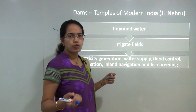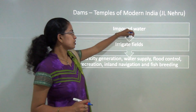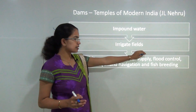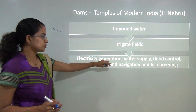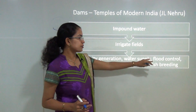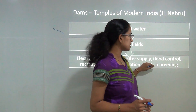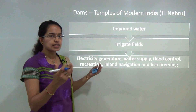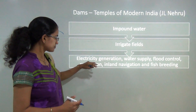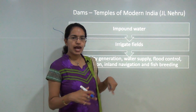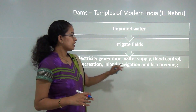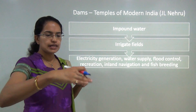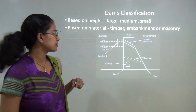Let's talk about the 'temples of modern India' — the multipurpose projects. The basic idea is to impound and store water that can be used to irrigate fields, generate hydroelectric power, supply water for domestic, agricultural, and industrial use, and control floods by channelizing or storing excess water. These areas also act as recreation zones, provide inland navigation or boating, and enable fish breeding near the projects.